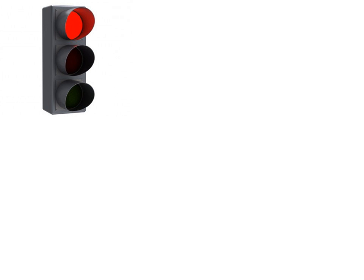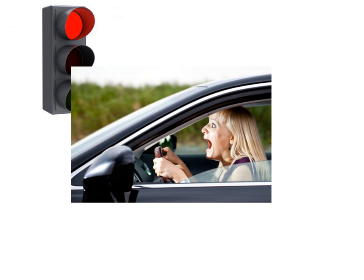Let's say you're driving down the road and you see a red traffic light. The red traffic light is the stimulus. When you see it, you need to process it — in other words, your brain registers the red traffic light.